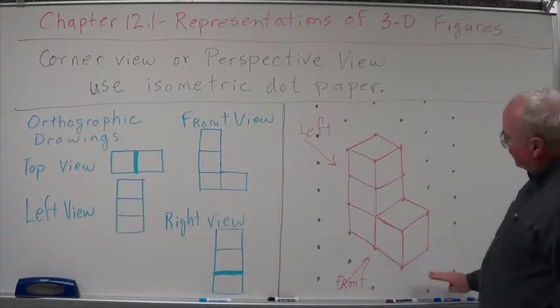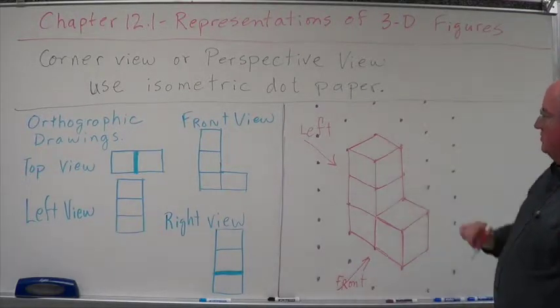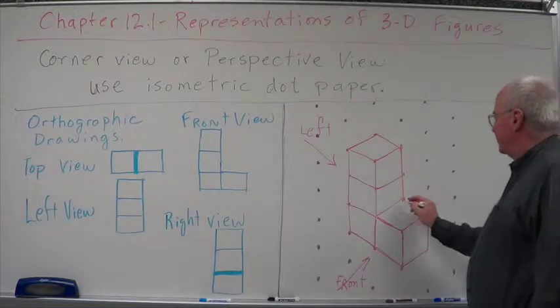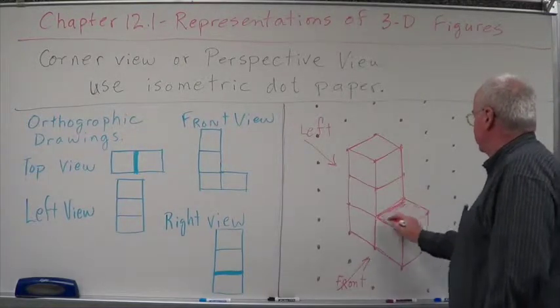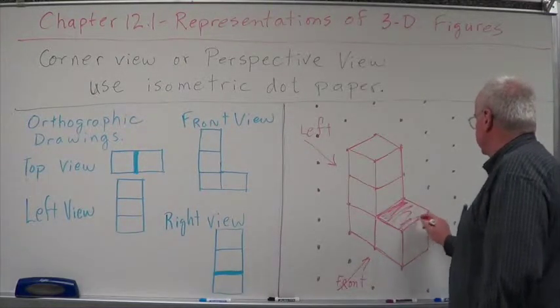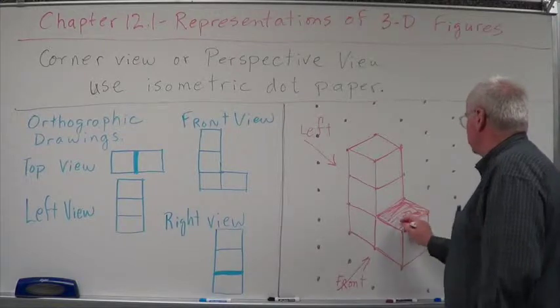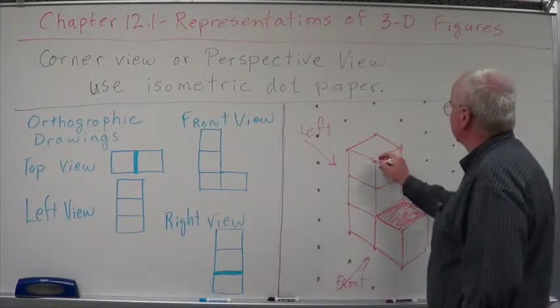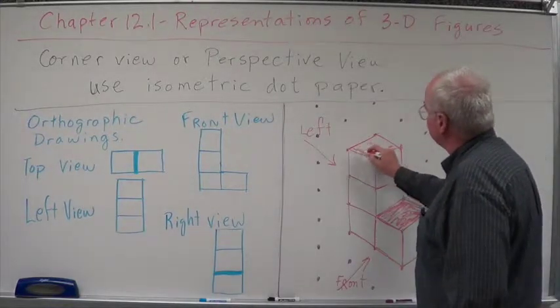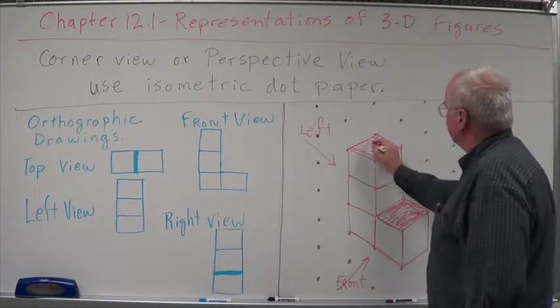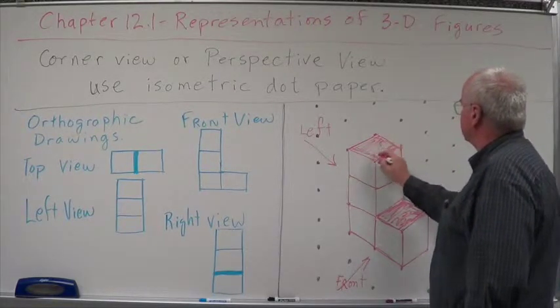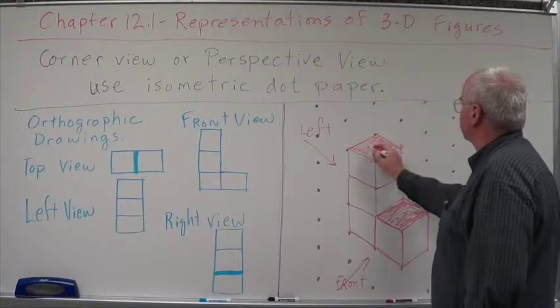So from the right view, I've got a one block and then I've got two up. Let's do this. Shade in our top so we can sort of see what's going on here. Give us some three-dimensional view of it. A little depth to it. And we can go from there.